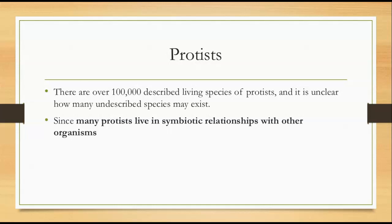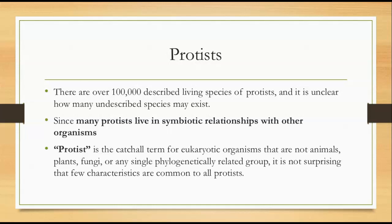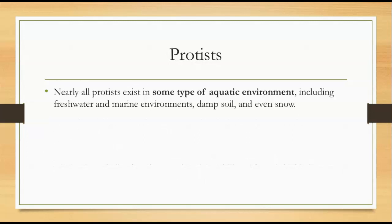The term protist is the catch-all term for eukaryotic organisms — eukaryotic organisms that have membrane-bound organelles and nuclei — that are not animals, plants, fungi, or any single phylogenetically related group. So it's not surprising that there are going to be few characteristics common to all protists, but we'll talk about some.